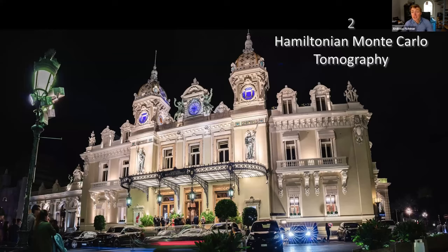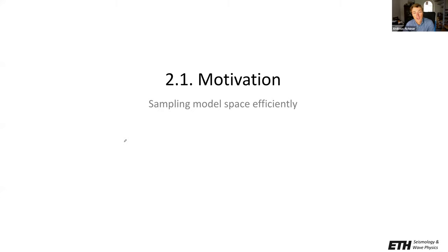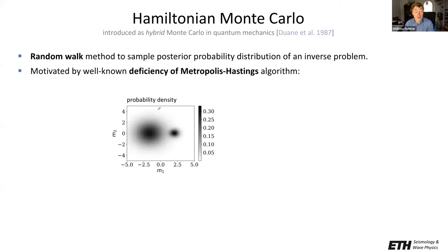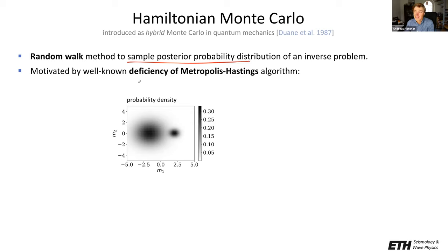Now let's continue to Hamiltonian Monte Carlo, specifically applied to seismic tomography. What you see here is the Monte Carlo casino, after which Monte Carlo methods have been named. The motivation of Hamiltonian Monte Carlo is the efficient sampling of model space. This method was introduced as hybrid Monte Carlo in quantum mechanics in 1987, but it took about three decades before it leaked into geophysics. It is a random walk method that allows us to sample the posterior probability distribution of an inverse problem.